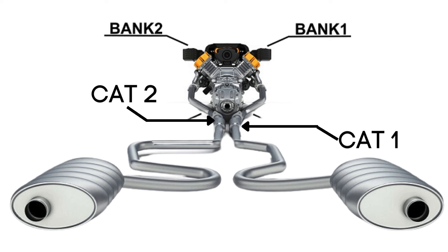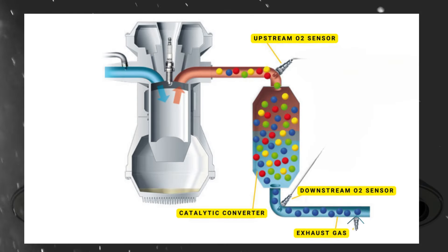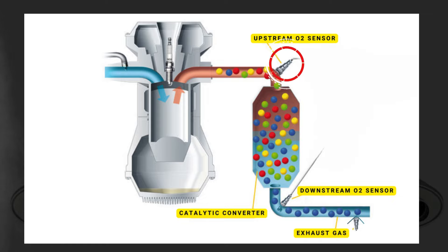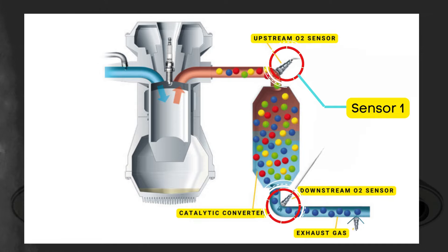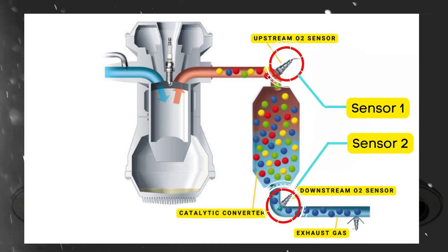Each bank has its own exhaust line, and each exhaust line is equipped with two catalytic converters. Each catalytic converter typically has two or three oxygen sensors. The upstream sensor, which we refer to as sensor 1, is positioned before the catalytic converter. Then there's the downstream sensor, known as sensor 2, which is located after the catalytic converter.